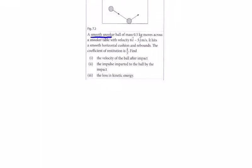Here we have a snooker ball of mass 0.5 kg moving with velocity 6i minus 5j. It hits the cushion and rebounds, and we're told e equals 4 over 5.